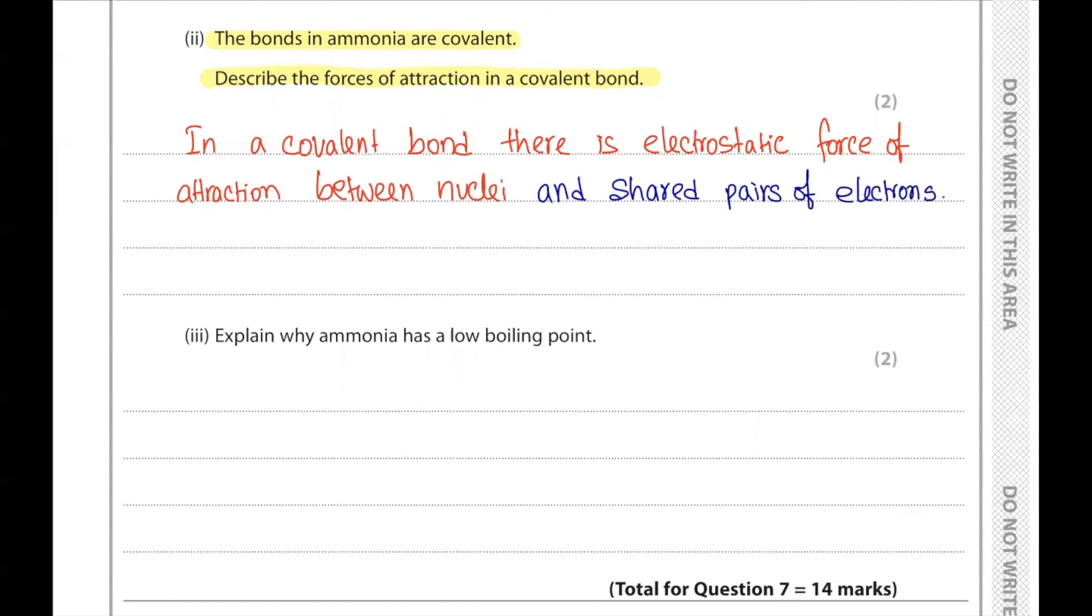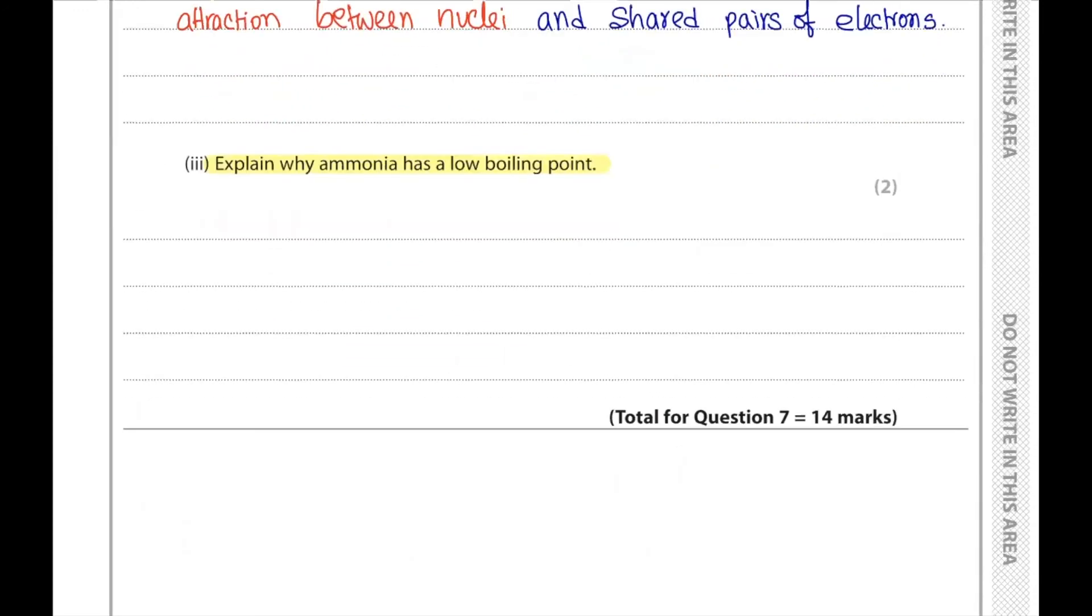Part 3. Explain why ammonia has a low boiling point. Between one ammonia molecule and another molecule, the forces of attraction between the molecules are much weaker. Therefore, it requires a very little amount of energy to overcome that particular force. Covalent bonds are stronger, but intermolecular forces between one ammonia and another ammonia are very weak. So very little amount of energy is needed to overcome that particular force.